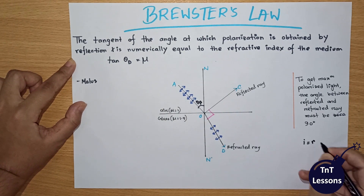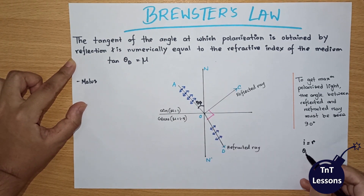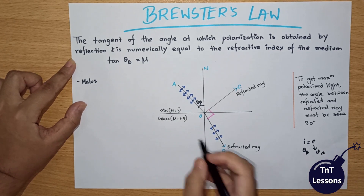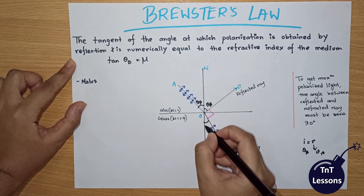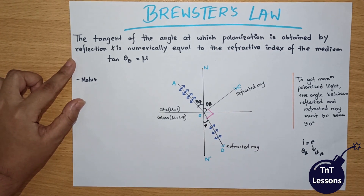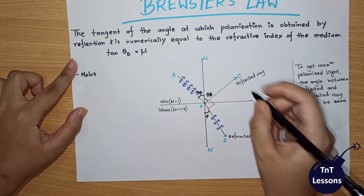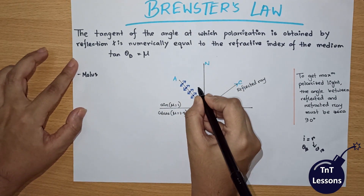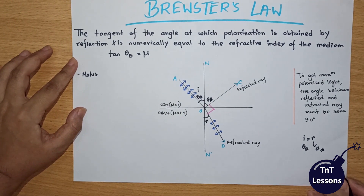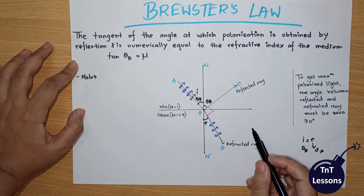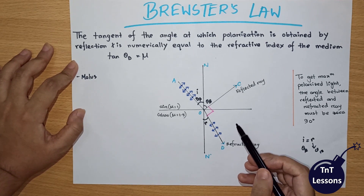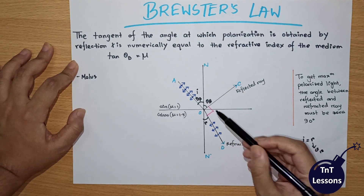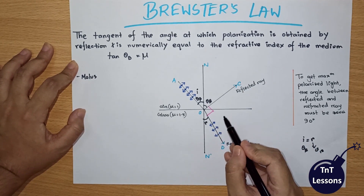This angle of incidence is equal to the angle of reflection. We call this angle theta B — the Brewster's angle. The incidence angle and the angle of refraction sum to 90 degrees.